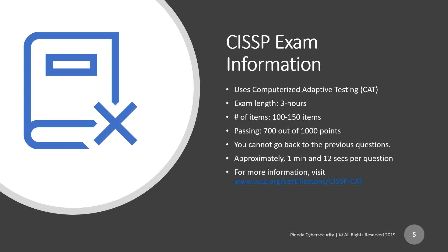You cannot go back to previous questions because it's CAT — once you submit, you move to the next. Dividing 150 items across three hours, you have approximately 1 minute and 12 seconds per question. For more information, you can visit the ISC² website to learn more about CISSP CAT.